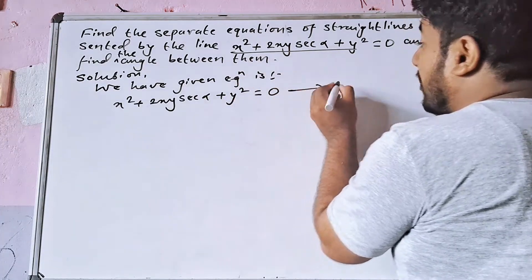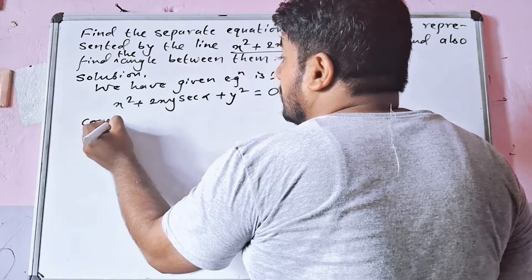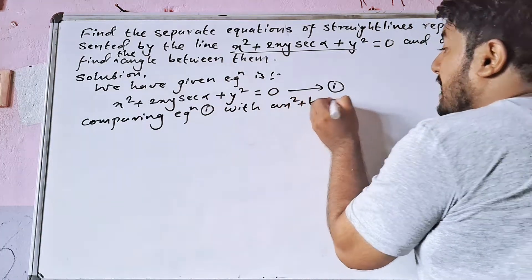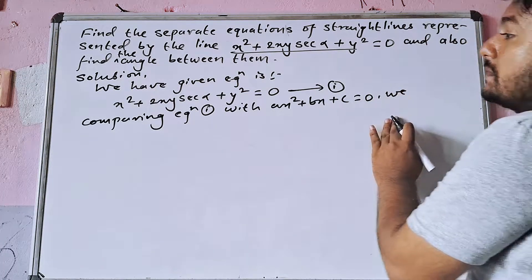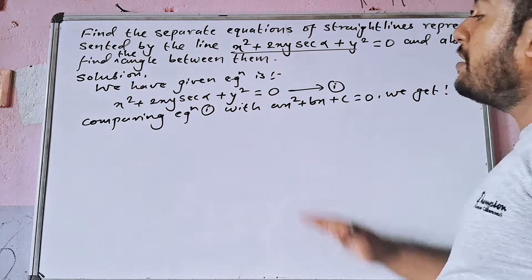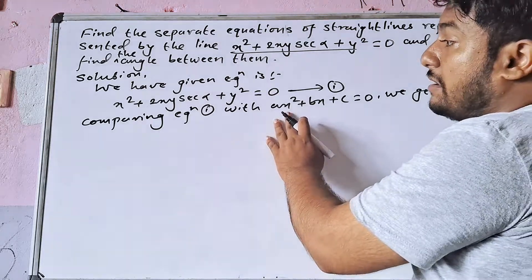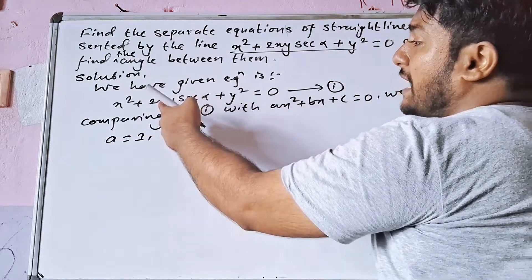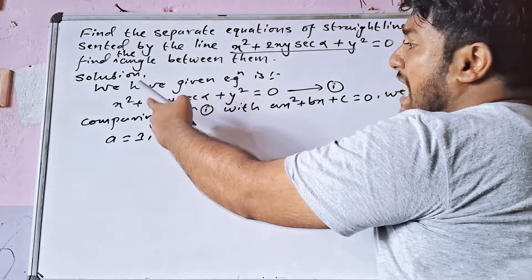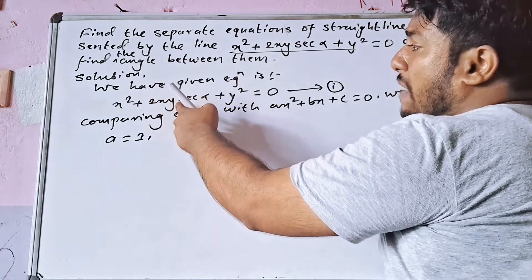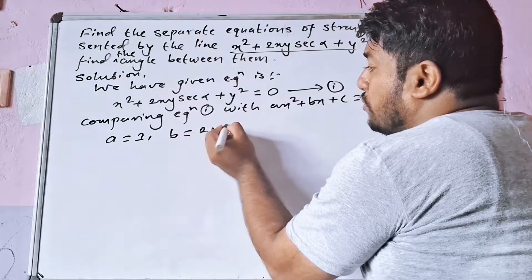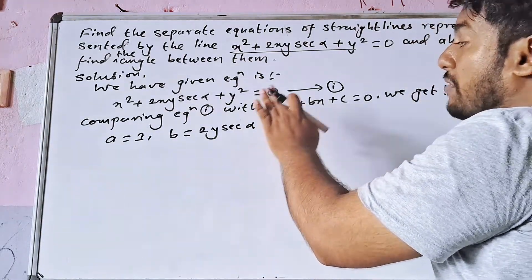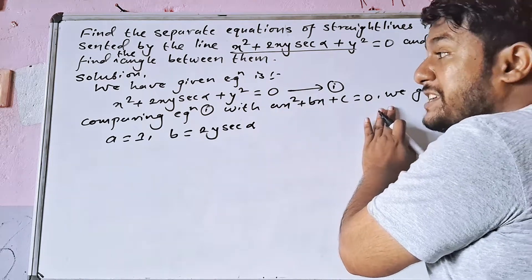Now it's like a quadratic formula. Comparing equation 1 with ax squared plus bx plus c equal to 0, we get: x squared coefficient gives a. The coefficient of x is equal to 2y·secα, giving b equal to 2y·secα.